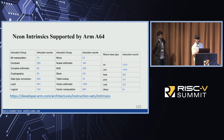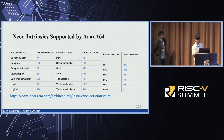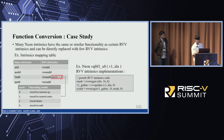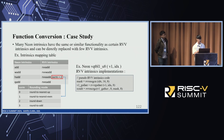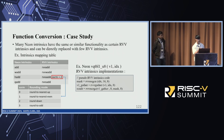This table shows Neon intrinsics supported by AArch64. One table is classified by the functionality of the Neon intrinsic and the other is classified by its return base type. Many intrinsics have the same or similar functionality as certain RVV intrinsics, so they can be directly replaced with a few RVV intrinsics. For example, from the intrinsic mapping table, we can see that vector add — including widening add, halving add, and saturation add — can be replaced with the corresponding RVV intrinsic, with some cases requiring rounding mode control.